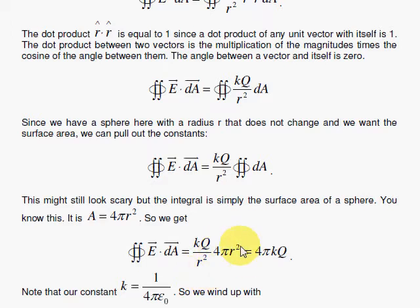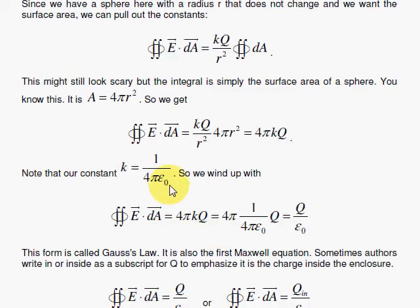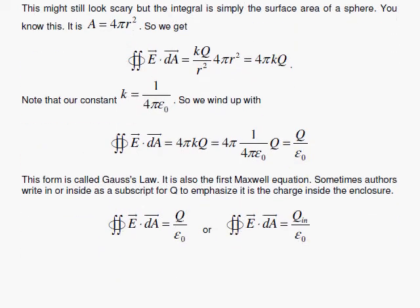So one's mathematical, one's physics. We cancel, and we get 4π times K times Q. And we put in for this constant, 1 over 4π, epsilon sub 0. The 4π's cancel. And you get a real cute result, big Q over epsilon sub 0. Some textbooks will emphasize this charge being inside the sphere by writing a little i n subscript, or inside.